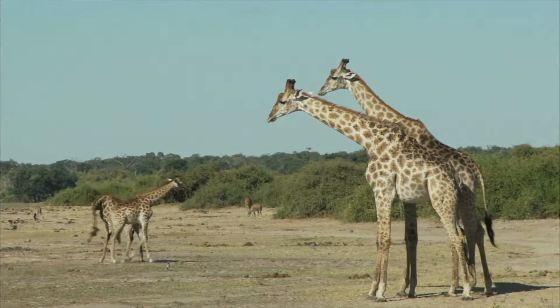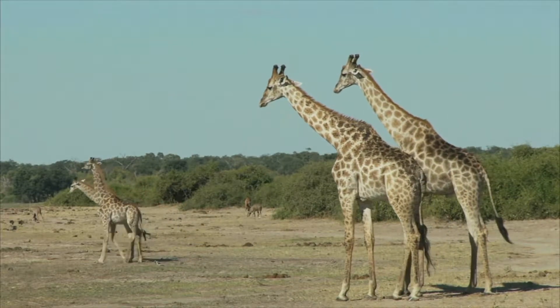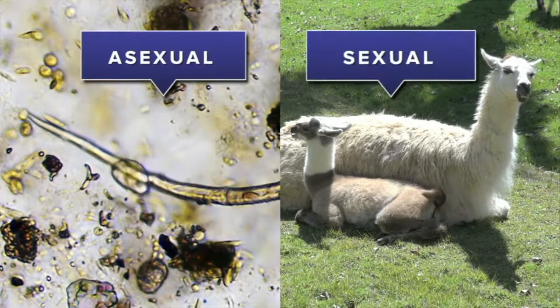That's why reproduction results in offspring that are more or less similar to the parent organism. Organisms reproduce in two ways: asexual and sexual reproduction.